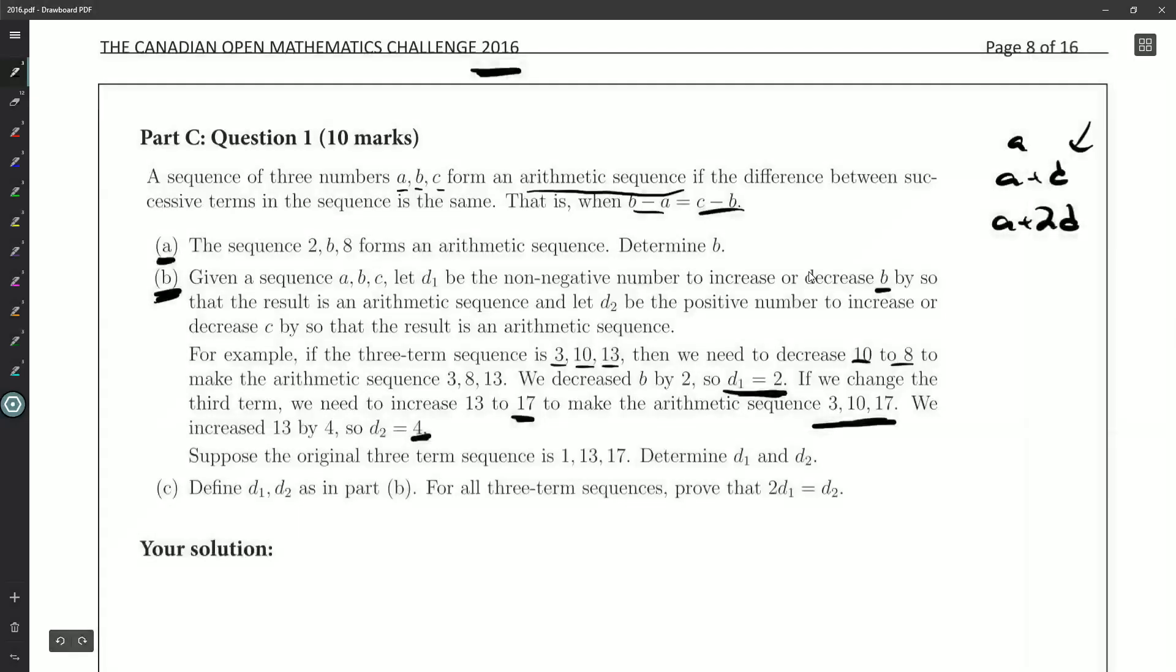And we have just one part remaining here. So C, define D1, D2 as in part B. For all three term sequences, prove that 2D1 is equal to D2. Interesting. So we have that in our last example, 4 and 8. And we even have that in their example, 2 and 4. So why would that be true?